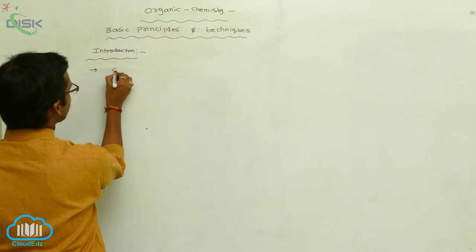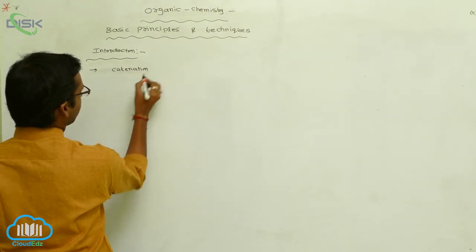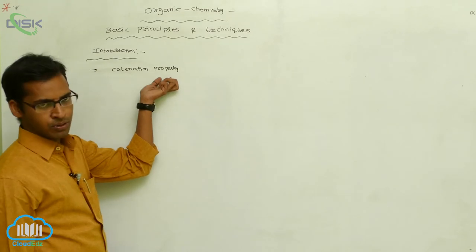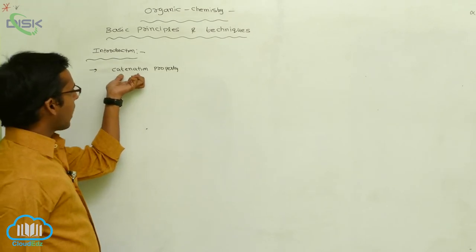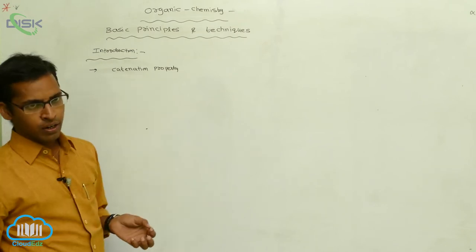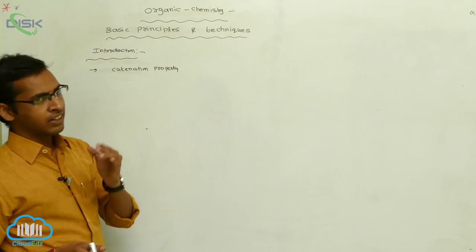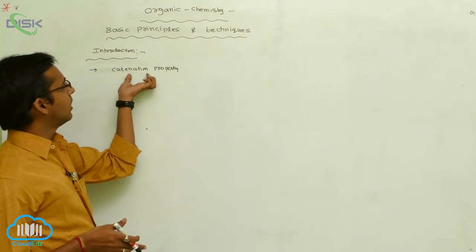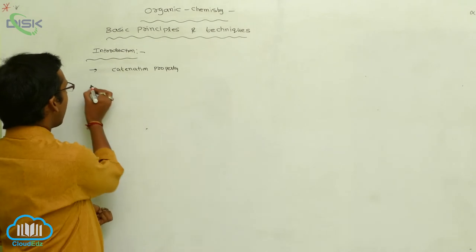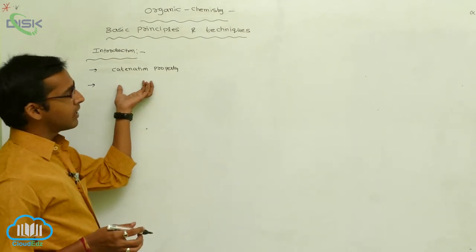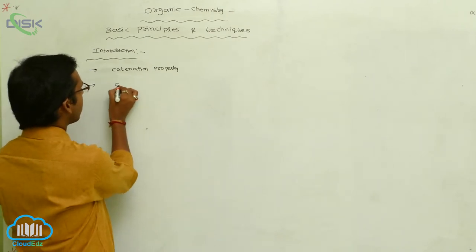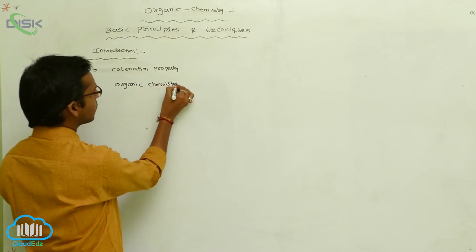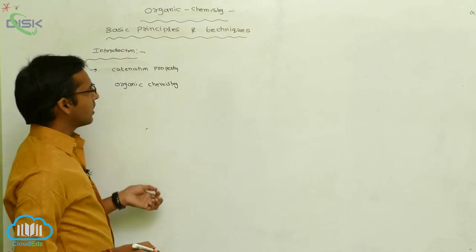Generally, carbon shows the catenation property. Due to the catenation property, carbon forms a large number of compounds. Carbon generally shows a covalent bond, due to which it interacts with nitrogen atoms, hydrogen atoms, or oxygen atoms — different atoms linking with carbon. This separate branch where we discuss carbon and their compounds is called organic chemistry.